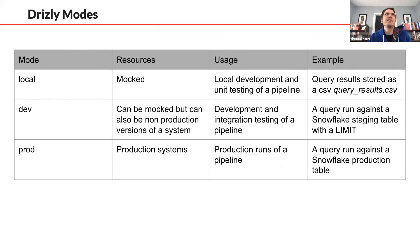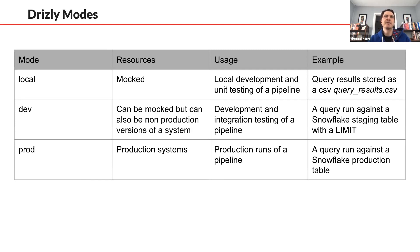When thinking about how to configure environments consistently across roles, we started with how to use modes within Dagster. We divided these into local, dev, and prod. Local mode has every resource mocked — for quick local development and unit testing. Instead of actually pinging Snowflake, it could just be files that mimic Snowflake query results. Dev mode can be mocked or non-production versions, like pinging a staging table with a query limit — for integration testing and confirming schema. And prod is for production systems.